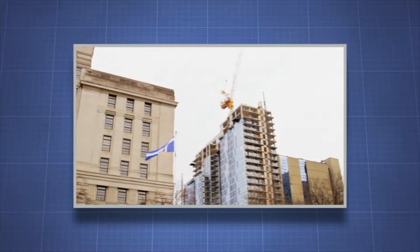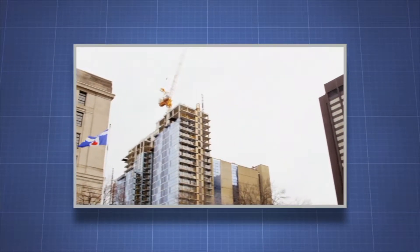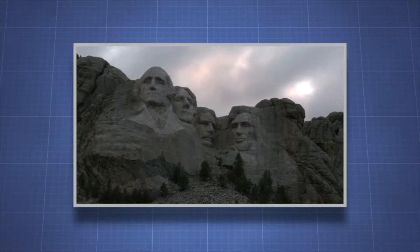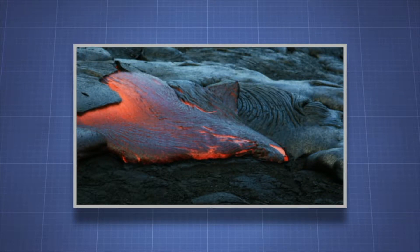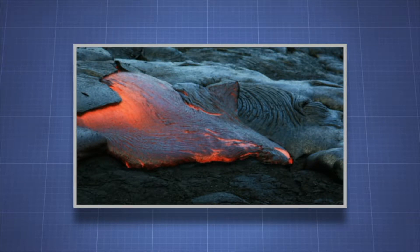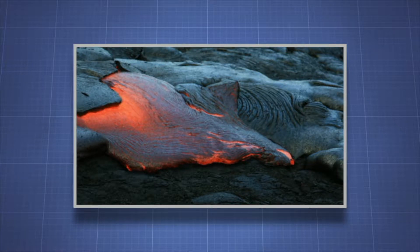Granite is a tough, hard rock widely used in construction and monuments. The Mount Rushmore monument was carved out of a granite mountain. Granite originates when rock from the crust is pushed down towards the mantle at subduction zones. These rocks melt and move upwards. Therefore, strictly speaking, granite does not originate in the mantle but deep in the crust.